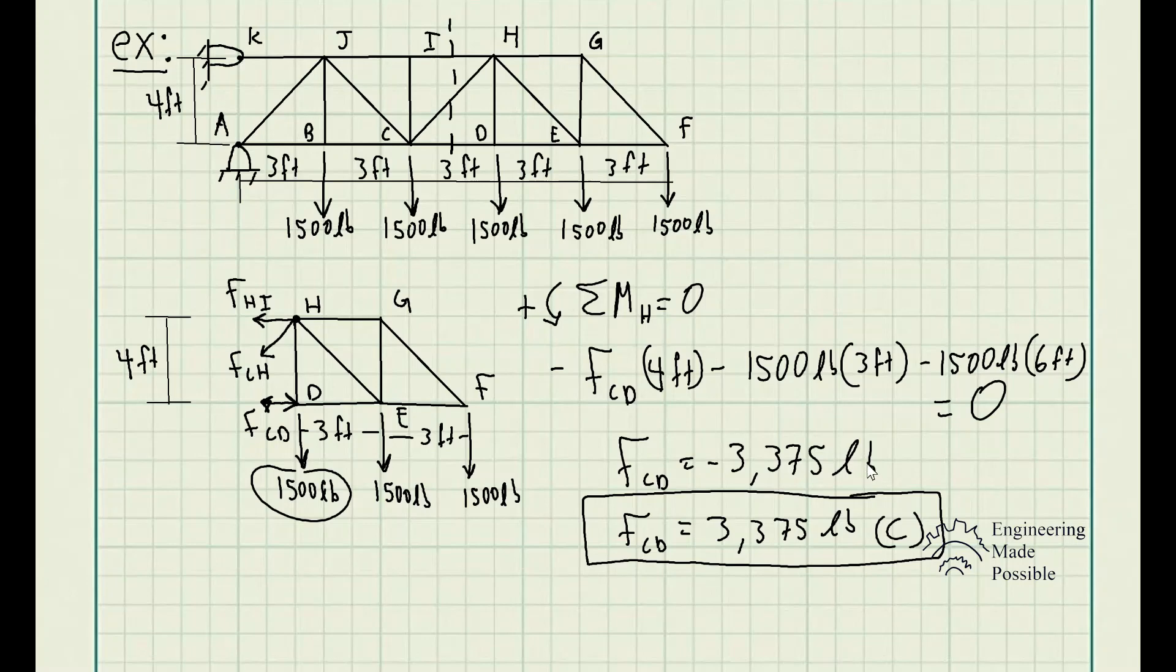is HI. So one thing to note is since this force HI is along the horizontal, it's best to do the sum of forces along the x direction here. So for the sum of forces along the x direction equal to zero, we have negative F_HI plus F_CD. Since we have the value is 3,375 pounds, take away F_CH. And we're only looking at the x component.